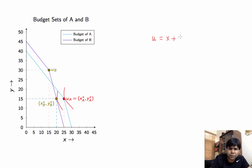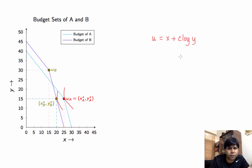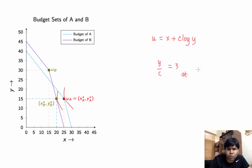We can think of a utility function of the form U(X,Y) = X + C·log(Y). We will show that this utility function can accomplish the objective for some value of C. The slope of the IC for this utility function is Y/C, and we want that to equal 3 at X = 20, Y = 15, which gives us the value of C.